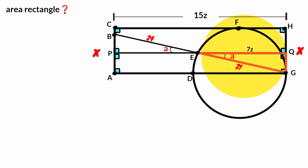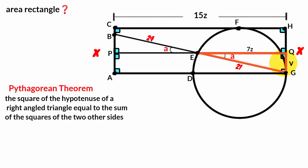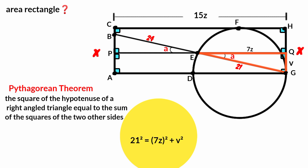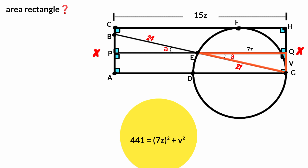Now come here to this triangle — it is a right angle triangle with two sides of lengths 21 meters and 7Z. If we let this side be V, we can use the Pythagorean theorem. The theorem states the square of the hypotenuse equals the sum of squares of the other two sides. So: 21² = (7Z)² + V², giving 441 = 49Z² + V², therefore V² = 441 − 49Z².